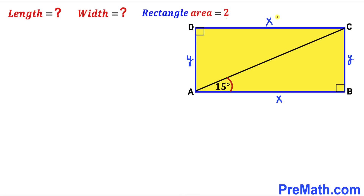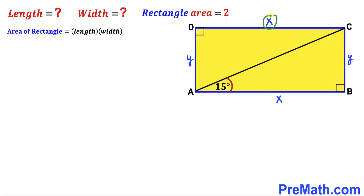Our task is to find the value of X and Y. Let's recall the area of rectangle formula: Area equals length times width. The length is X, the width is Y, and the area is 2. So we can write X times Y equals 2. We'll label this as equation number 1.